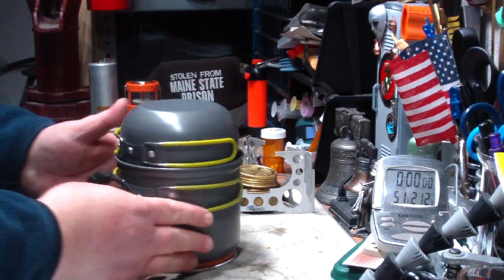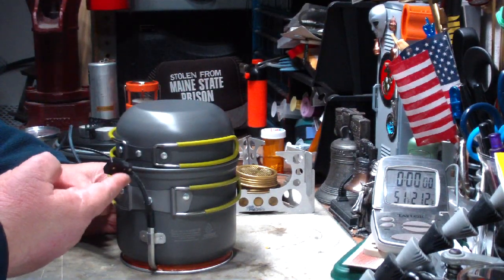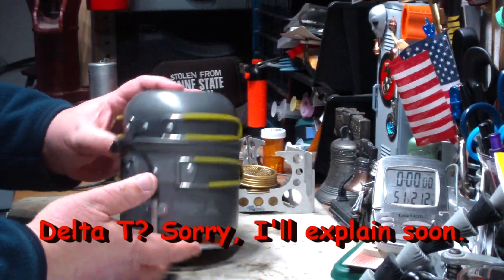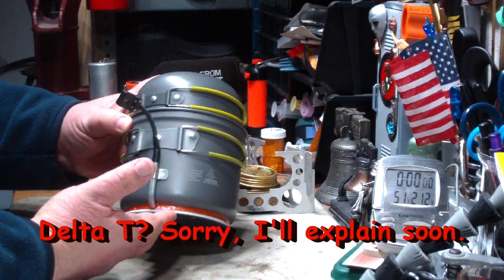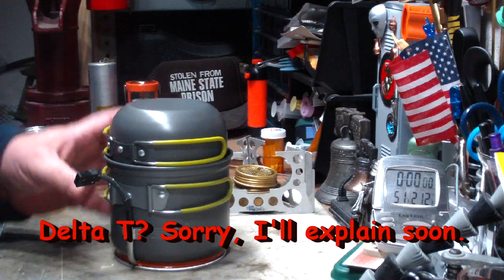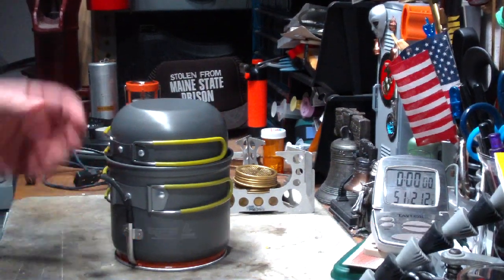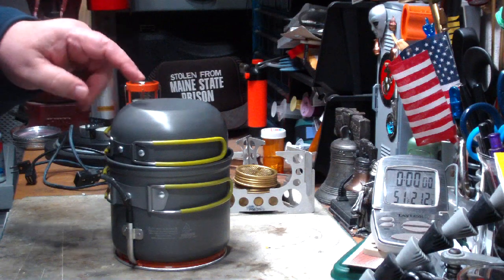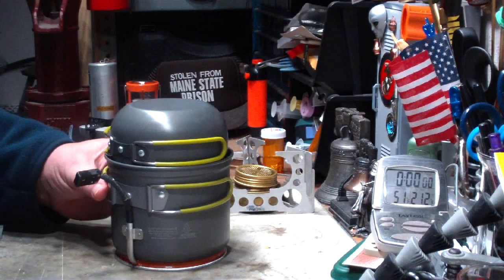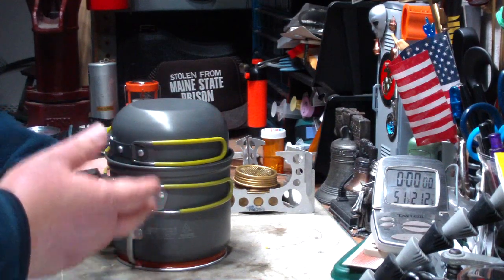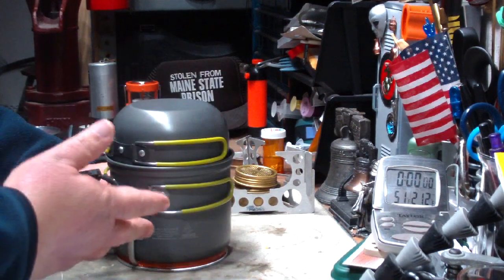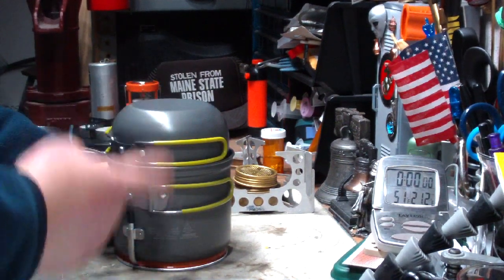It's made for thermal generation - a pot that generates electricity depending on the delta T between the flame or whatever heat provider you have and cold on the inside. So something like this would work great in the winter if you were able to use ice cold water or water with ice in it or snow, so you'd have a bigger delta T, which means change in temperature.